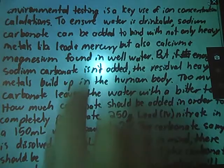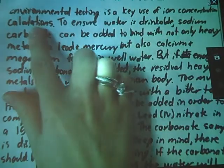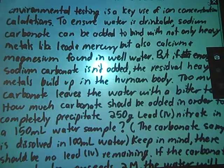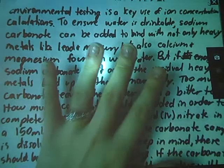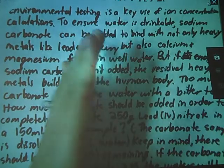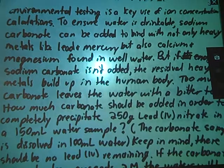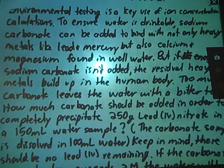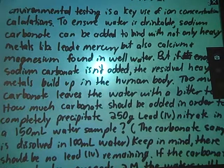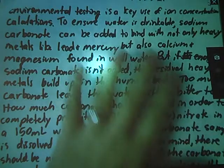It says that environmental testing is a key use of ion concentration calculations. This is true actually because depending on the concentration of a particular ion in solution you might be able to drink it or not. Again, this is all in the spirit of trying to come up with problems, so I have no idea if sodium carbonate is actually used or not. I just made up the problem.